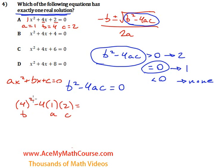4² is 16, minus 4 times 1 times 2. 2 times 1 is 2, times 4 is 8. 16 minus 8 is 8.